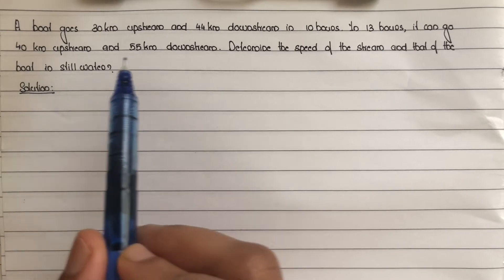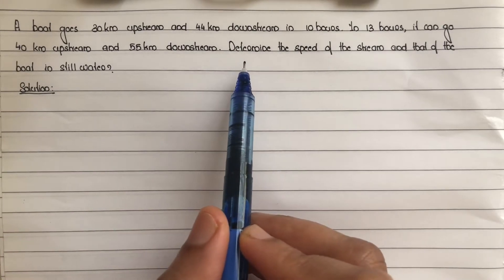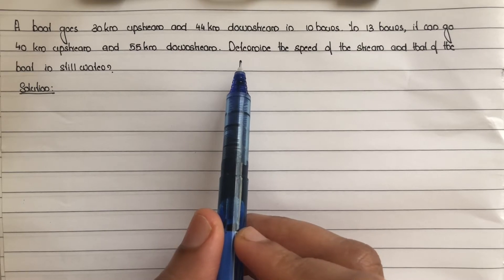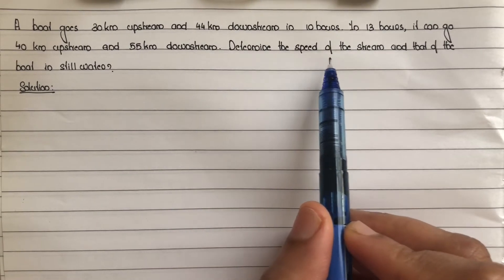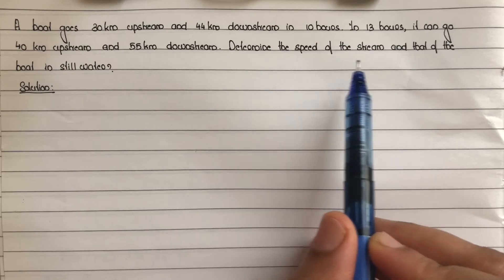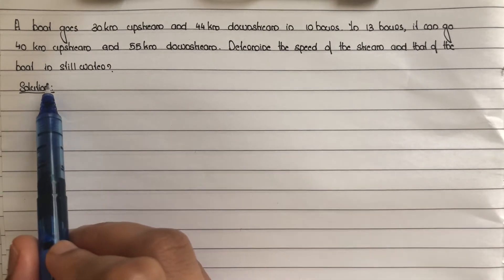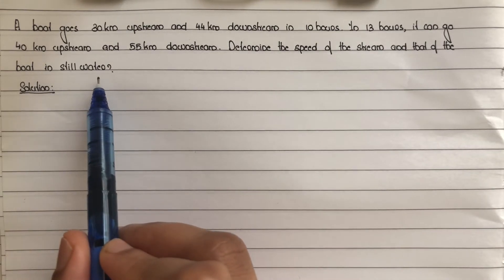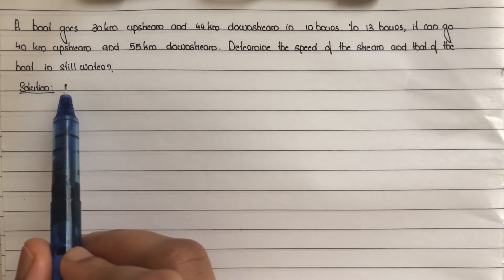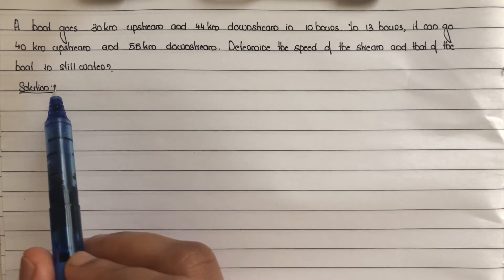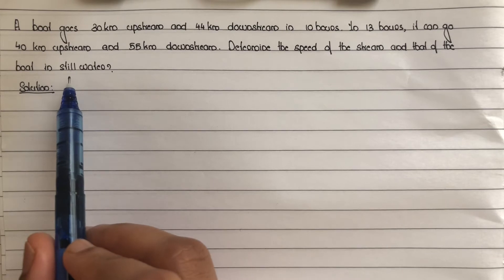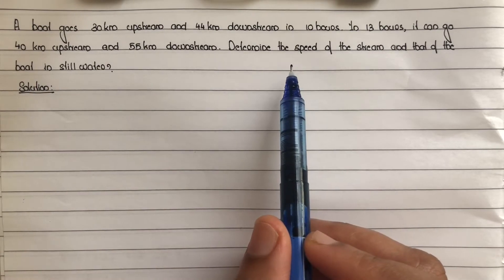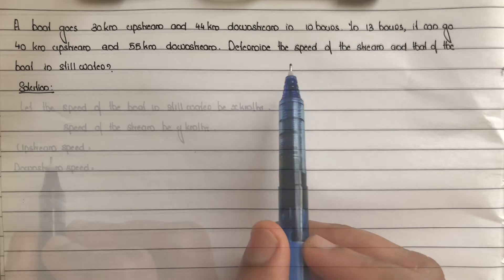First step: determine the speed of the stream and that of the boat in still water. Let the speed of the boat in still water be x km per hour and the speed of the stream be y km per hour.